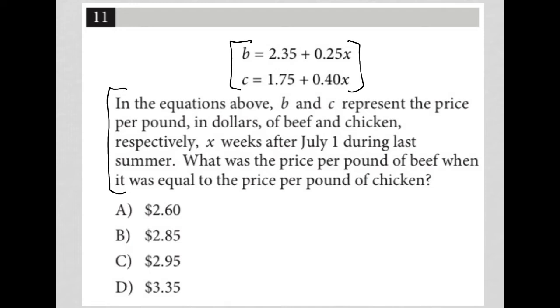The question says: b and c represent the price per pound in dollars of beef and chicken, respectively, x weeks after July 1st. What was the price per pound of beef when it was equal to the price per pound of chicken? We know b = c, so I can replace b with c. This gives us c = 2.35 + 0.25x and c = 1.75 + 0.40x.